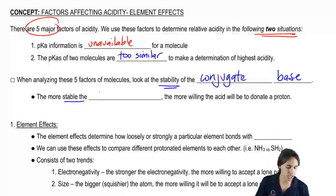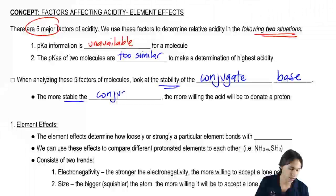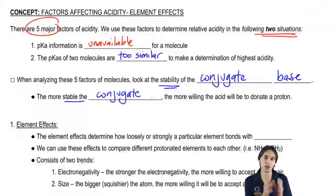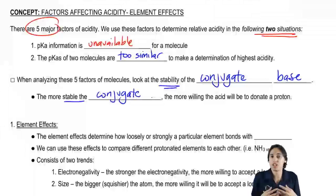So the more stable the conjugate, the more willing the acid is going to be to donate a proton. How does that make sense? Well, remember the conjugate base is what the acid becomes after it reacts. If the conjugate base is very, very stable, then it's going to say, hey, I'm fine giving up a proton as an acid because if I give up a proton, I'm just going to be this really nice stable conjugate base. Awesome.